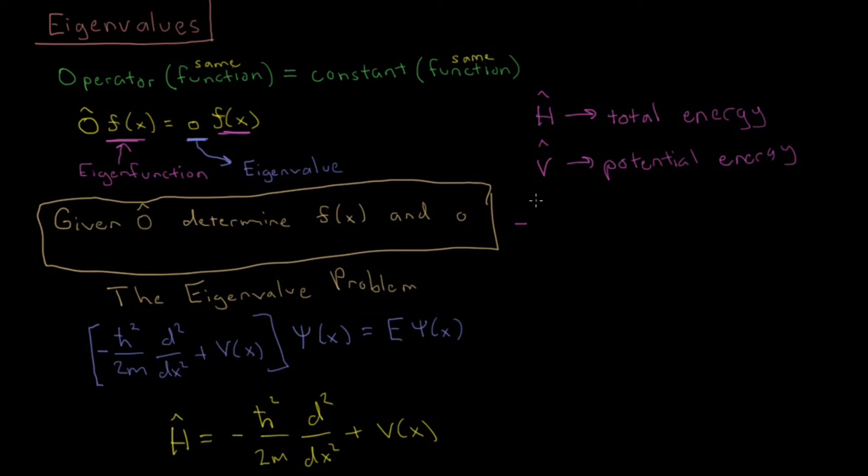Then, we have this value minus h-bar squared over 2m second derivative with respect to x. We know that the potential energy plus kinetic energy has to equal total energy. So, here's our potential energy, so the rest of this must be kinetic energy.